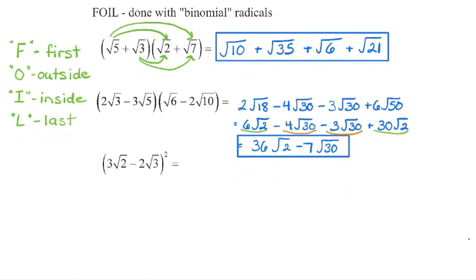We now have like radicals in two pairs of terms. The radicand stays the same — add the coefficients. Negative 4 plus negative 3 is negative 7.